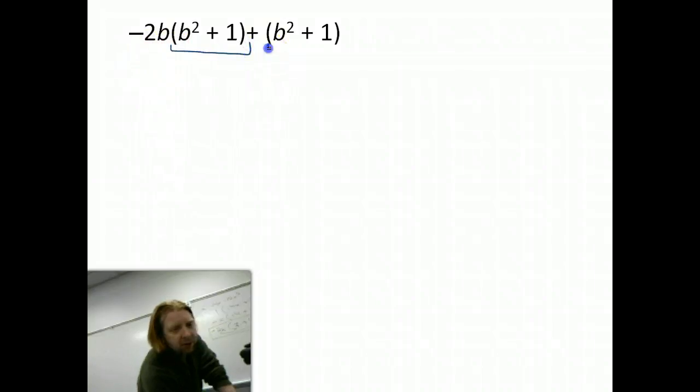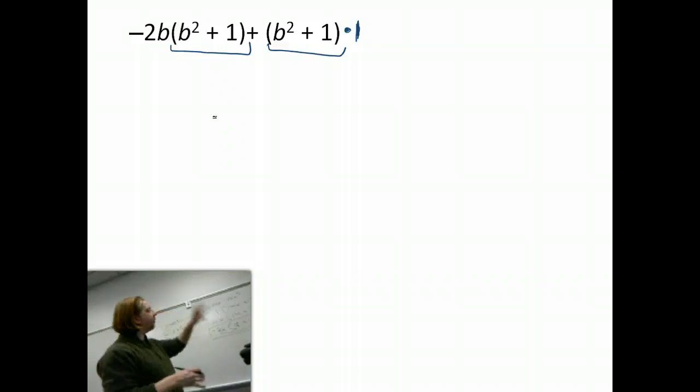They both have a b squared plus one. Now remember, you can always make anything times one. And that's what we're going for in this problem, is that idea that I'm going to factor a b squared plus one out of the first term, negative 2b, and out of the second term, that being b squared plus one times one.